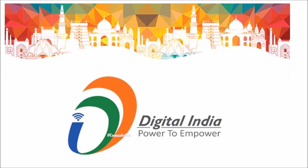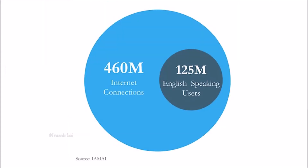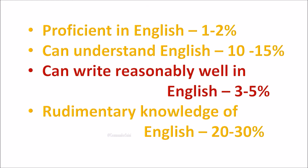As per IMI, there are about 125 million English-speaking users while internet penetration is 460 million. As internet connections and mobile applications grow, the percentage of English-speaking users will continue to reduce. Those proficient in English are about 1-2%, those who can understand English in some form are 10-15%, those who write reasonably well are 3-5%, and those with rudimentary knowledge are 20-30%.